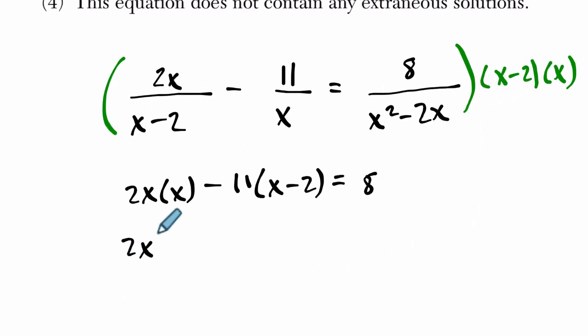Then we're left with the quadratic, 2x squared minus 11x plus 22, and let's just subtract 8 over here, equals 0. And that means 2x squared minus 11x plus 14 equals 0.